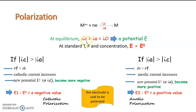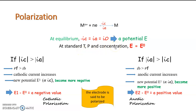At equilibrium, both the currents become equal, which leads to an exchange current density. At that time, the potential is E, and this potential is recorded at standard temperature, pressure, and concentration. We say that it is a standard electrode potential.